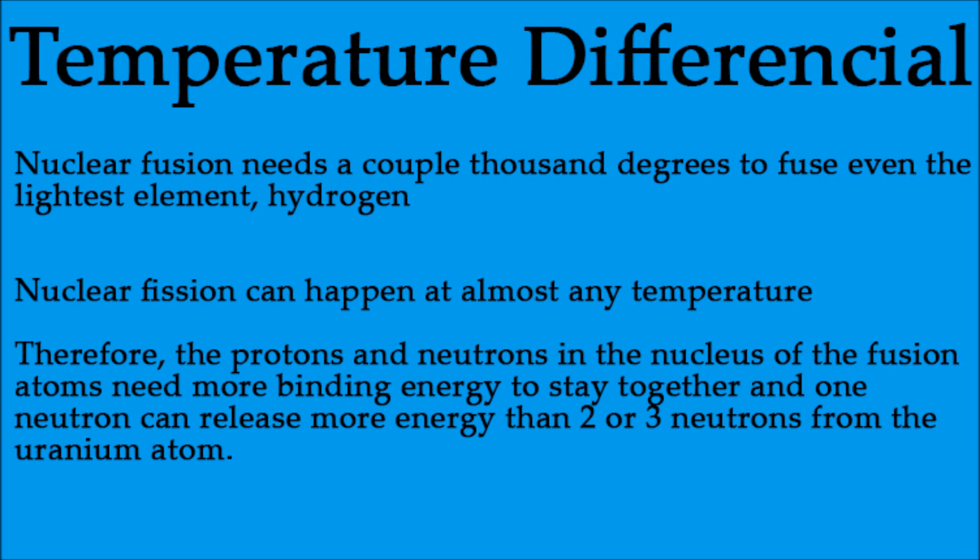Fusion needs a couple thousand degrees for the atoms to start fusing, even if the atoms are of the lightest element, hydrogen. Fission, on the other hand, can occur at almost any temperature. The heat of fusion excites the protons and neutrons in the atom's nucleus, making it harder to keep them together. So the binding force released by two or three neutrons from the uranium atom is only a small part of the total binding energy of the atom, while the binding force released by the one neutron from the tritium and deuterium fusion is a significant part of the total binding energy.